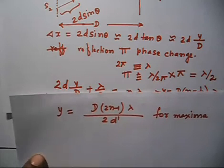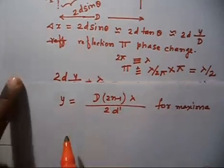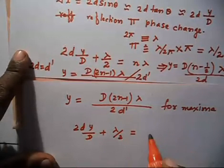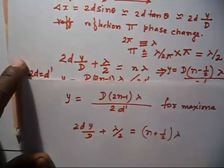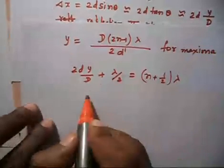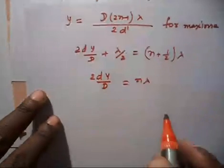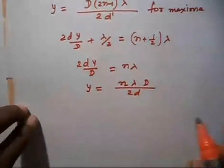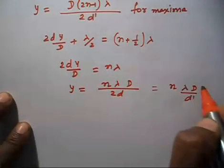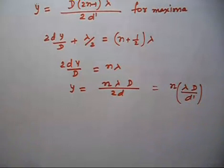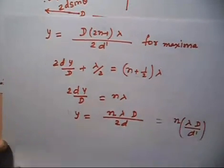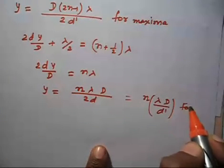For minima in Lloyd's mirror, the total path difference (2D·y/D_capital) + lambda/2 must equal (N + 1/2)·lambda. The lambda/2 terms cancel, giving 2D·y/D_capital = N·lambda. Solving for y: y = N·lambda·D_capital / (2D) = N·lambda·D / D_dash. This is a simple integer multiple of lambda — which is exactly the condition for maxima in Young's double slit experiment, confirming that the conditions are interchanged.